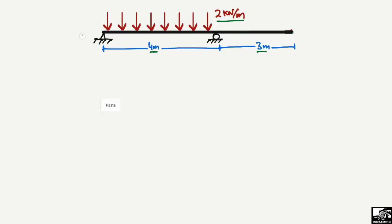To find the support reactions, let's consider support A and support B. Support A is a hinge support, so it can take vertical load Ra and also a horizontal load. However, there is no horizontal load acting on the beam, so the horizontal component of the support reaction is equal to zero.